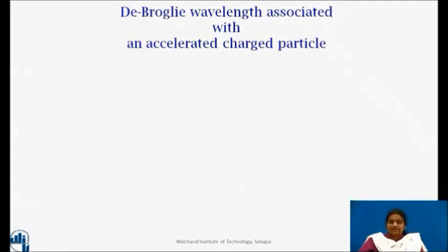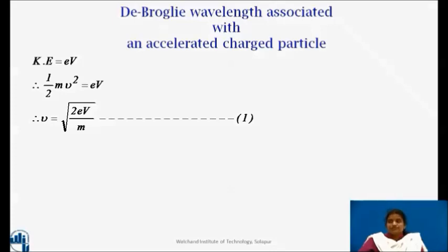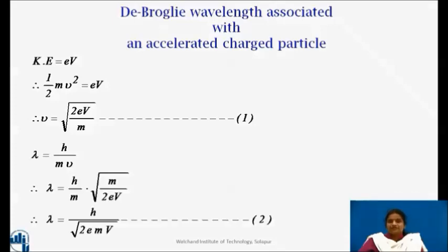Now, let us see de Broglie wavelength associated with an accelerated charged particle. If a charged particle such as electron is accelerated by a potential difference V, then its kinetic energy is given by e into V which is equal to half mv square. Therefore, v is equal to root 2eV by m. Then the electron wavelength is given by, after simplification, lambda is equal to h upon root 2em into V.